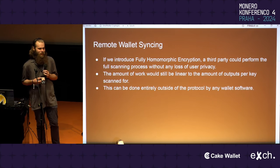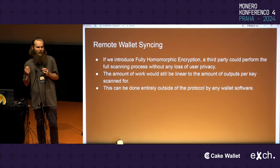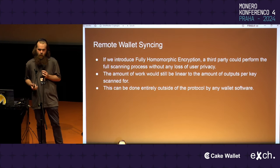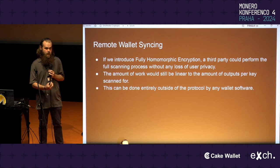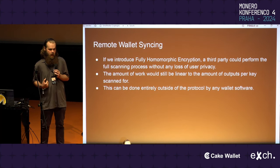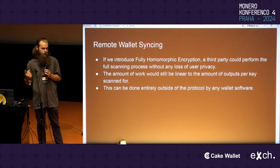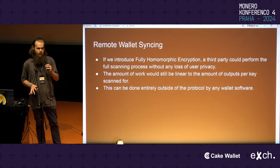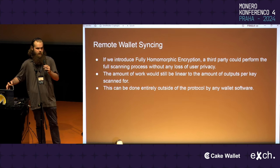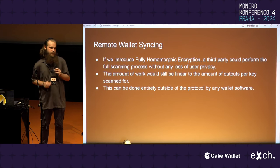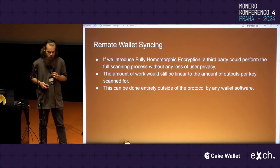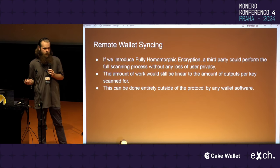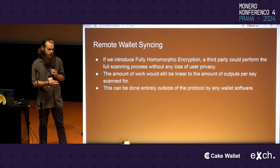If we introduce fully homomorphic encryption — because why not throw more numbers at it — with the same theoretical complexity, they could actually do the full scan process without any loss of privacy. Instead of saying 'I did 255/256ths of the work, you do the rest,' they can say 'I scanned the entire blockchain for you — here are the exact outputs that are yours,' without being able to tell which outputs those are. It would be a really powerful primitive and would not increase the theoretical complexity.